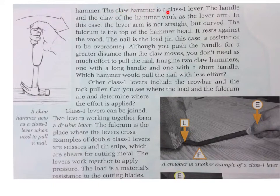The claw hammer is a class 1 lever. The handle and the claw of the hammer work as the lever arm. In this case, the lever arm is not straight but curved. The fulcrum is the top of the hammer head. It rests against the wood. The nail is the load, in this case a resistance to be overcome.